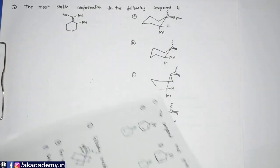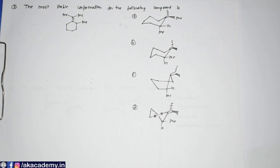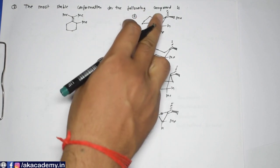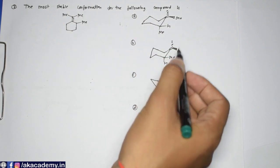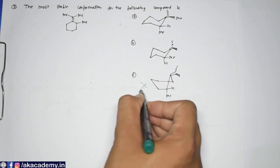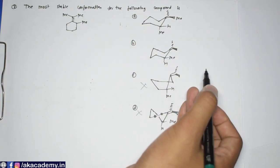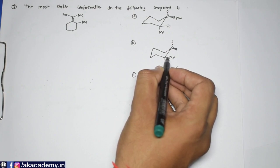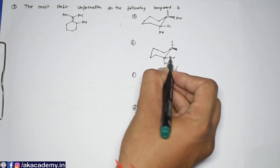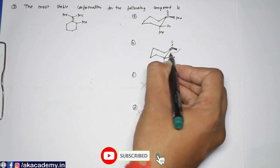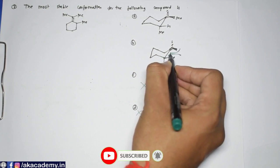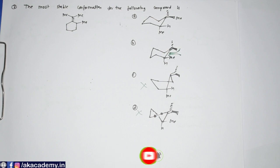The next question asks for the most stable conformation of the compound. The first two options can be eliminated as less stable. If the methyl is positioned such that repulsion occurs across the double bond, that causes steric hindrance — this is known as 1,3-allylic strain. That makes those conformations unstable.